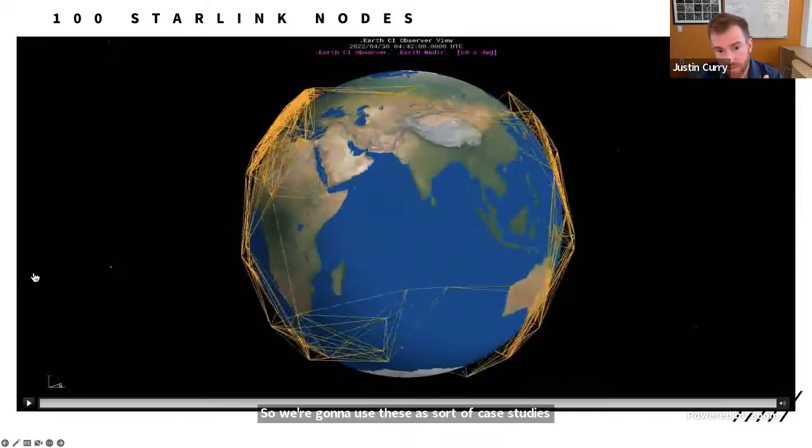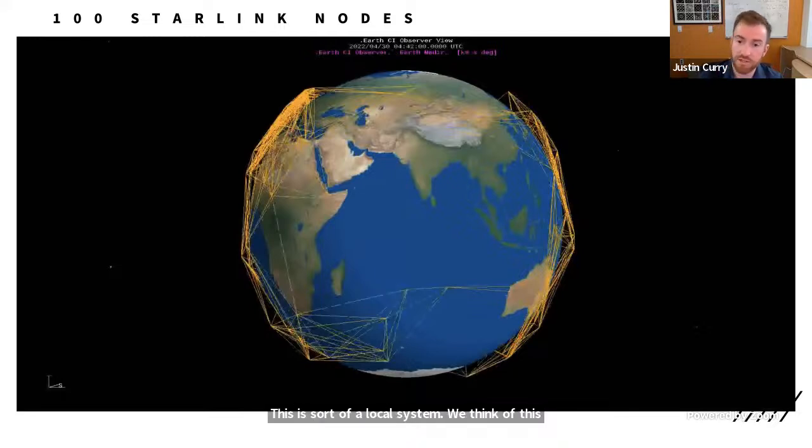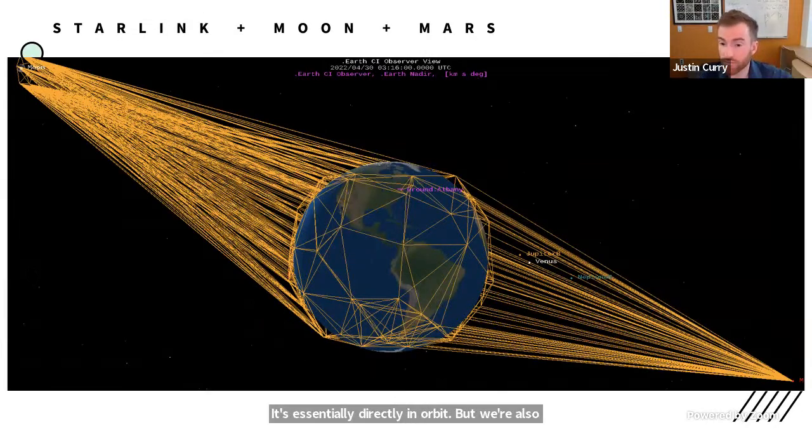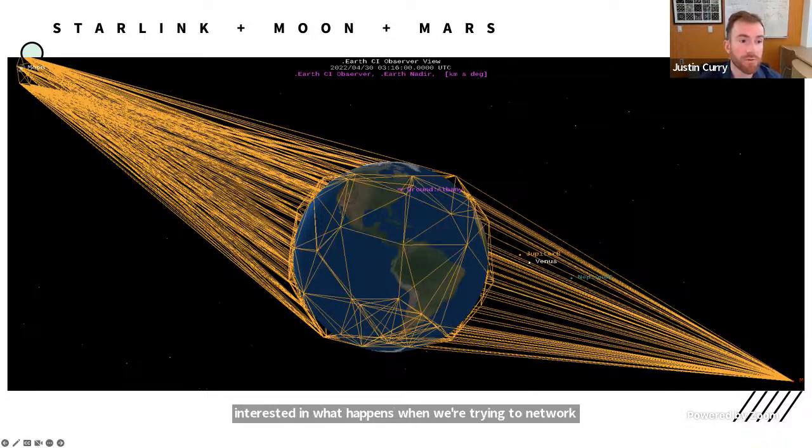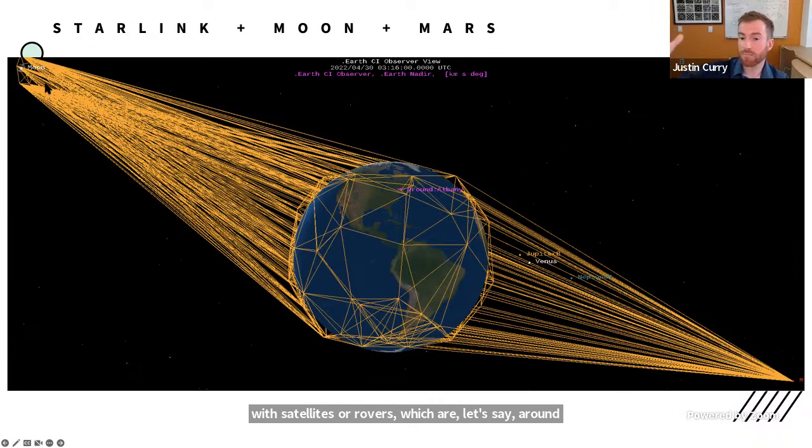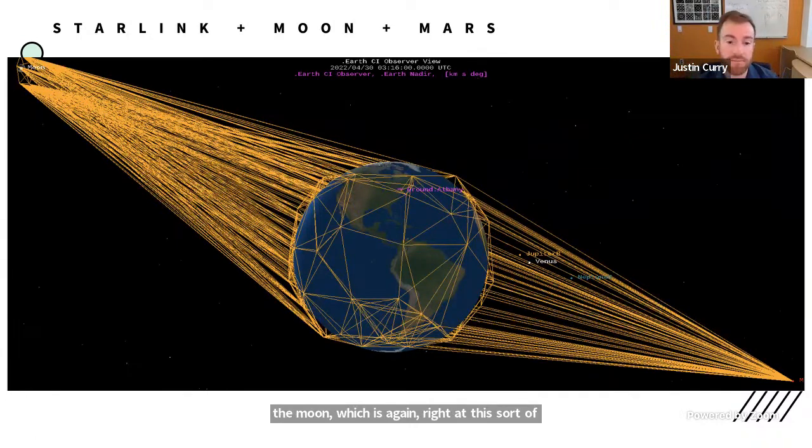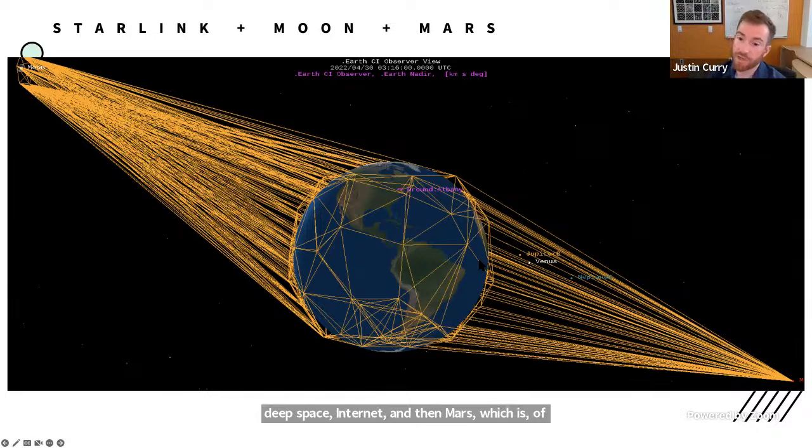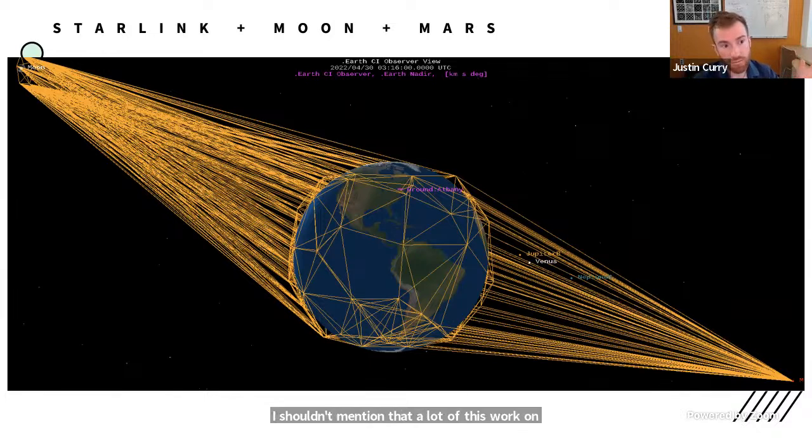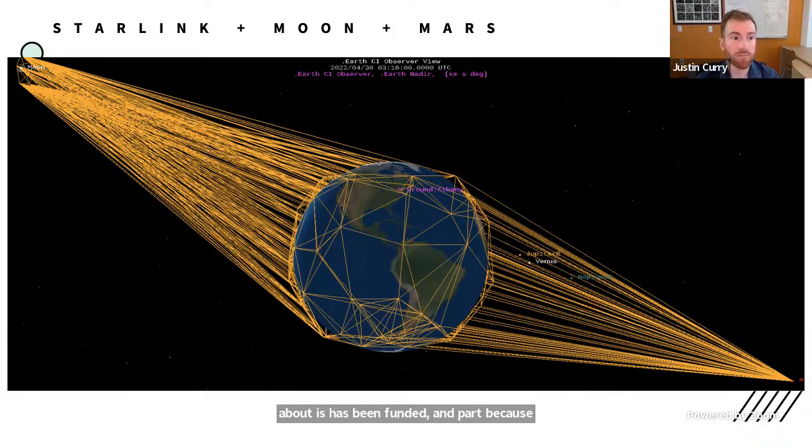Okay. So we're going to use these as sort of case studies. This is sort of a local system. We think of this as a near earth internet. It's essentially directly in orbit. But we're also interested in what happens when we're trying to network with satellites or rovers, which are around the moon, which is again, right at this sort of dividing point between near earth and sort of deep space internet. And then Mars, which is of course where we're hoping to go and build up our presence. I should mention that a lot of this work I'm talking about has been funded in part because Artemis is supposed to make a reappearance on the moon in 2024, which is really viewed as sort of a test run for longer human-based missions to Mars.